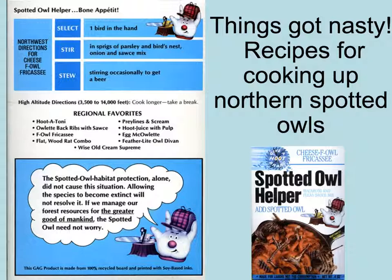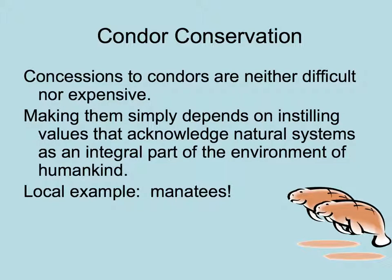A similar situation has happened in the Lower Keys, where key deer live — there's even a place called the Key Deer Barbecue with the same sort of sentiment. But the California condor example showed that concessions to conservation were neither difficult nor expensive, and making those concessions simply depended on calling up values that acknowledge natural systems as an integral part of the environment of humankind.